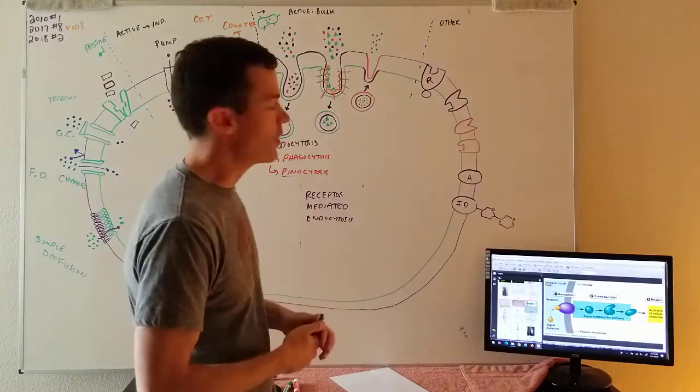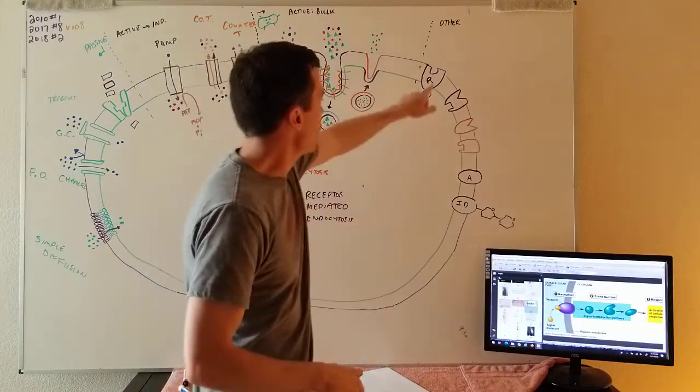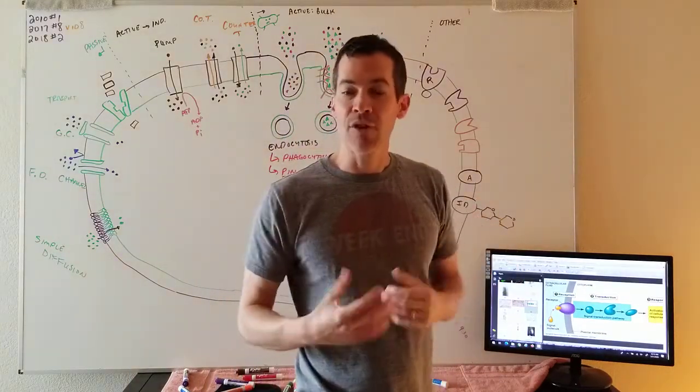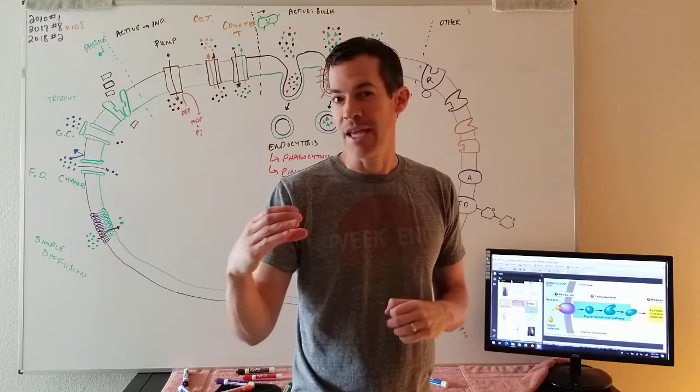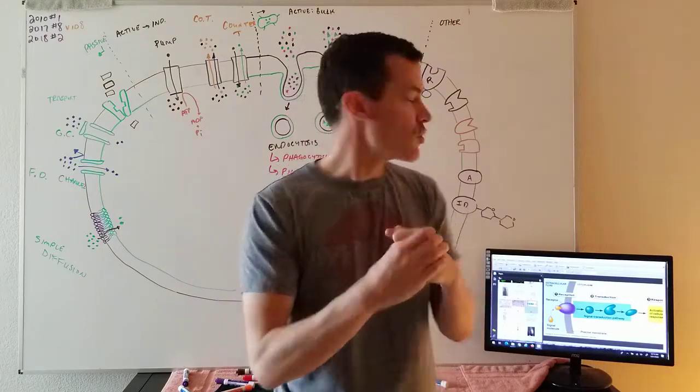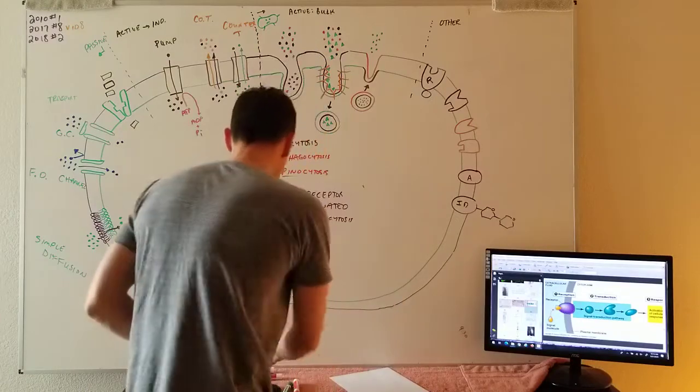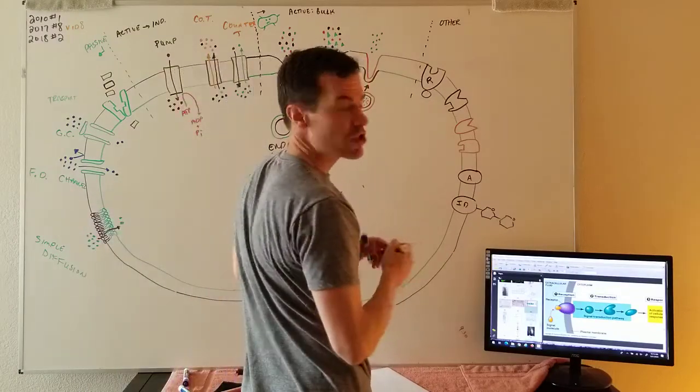A receptor—the thing that binds to a receptor is called a ligand. Back with enzymes, what binds with an enzyme in the active site is called a substrate, but with receptors it's called a ligand. I'll have a receptor that has a specific shape that's complementary to its ligand.